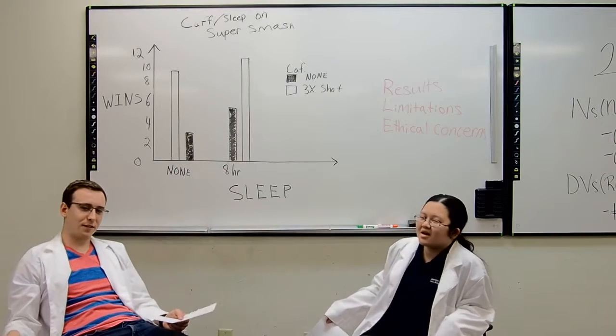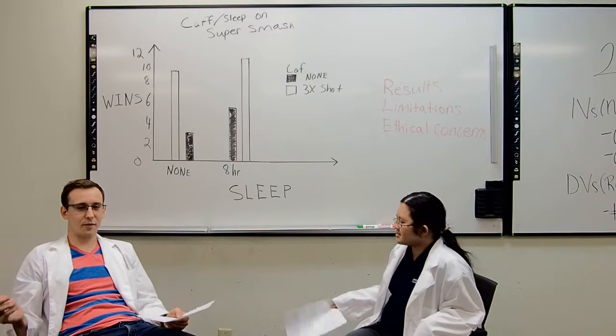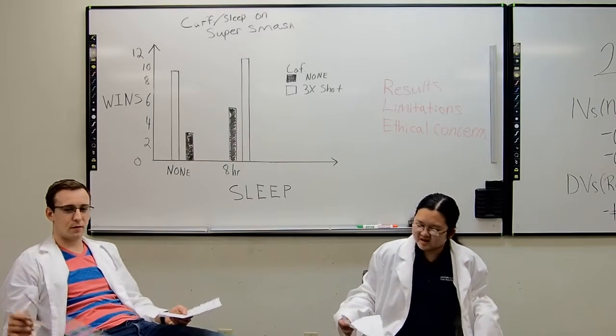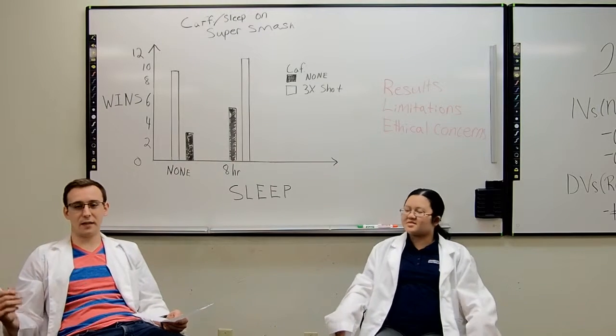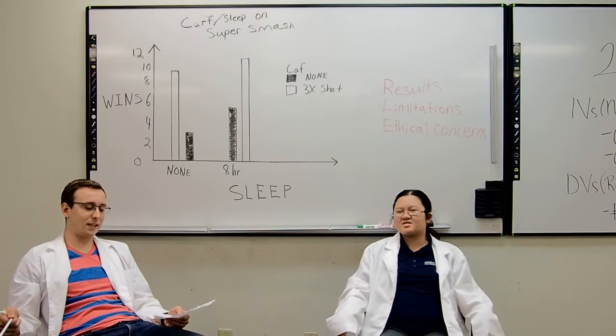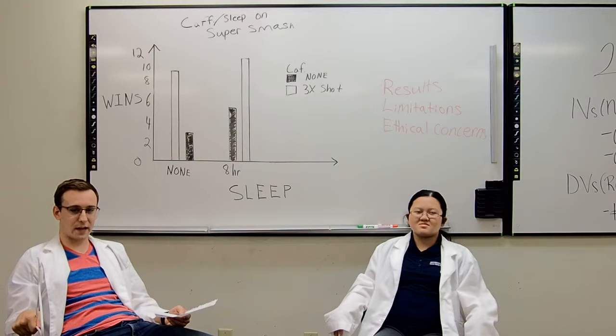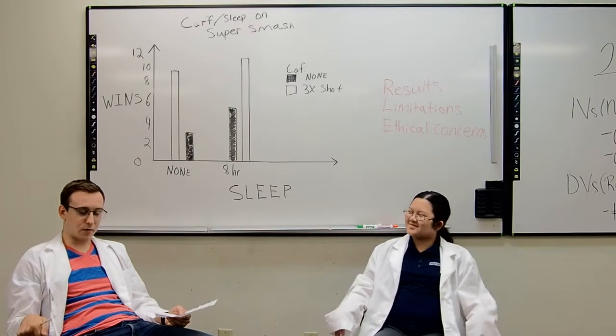Some limitations of this study are the small sample size, only five participants were used. It was a convenient, non-probabilistic sample. Order effects, counterbalancing was not used.